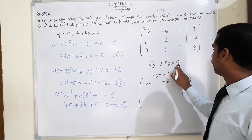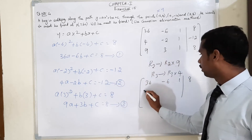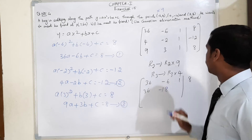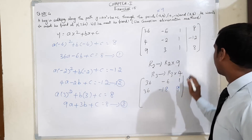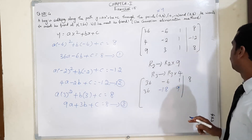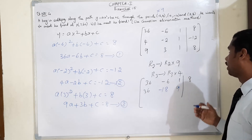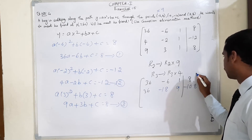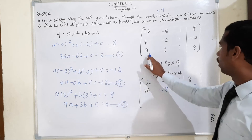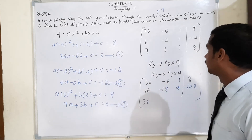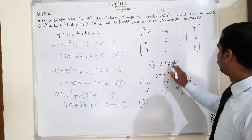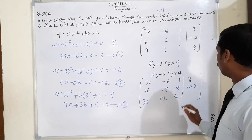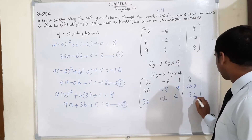R2 multiplied by 9: each term times 9 gives 36, -18, 9, and -12 × 9 = -108. Third row multiplied by 4: 9 × 4 = 36, 3 × 4 = 12, 1 × 4 = 4, and 8 × 4 = 32.